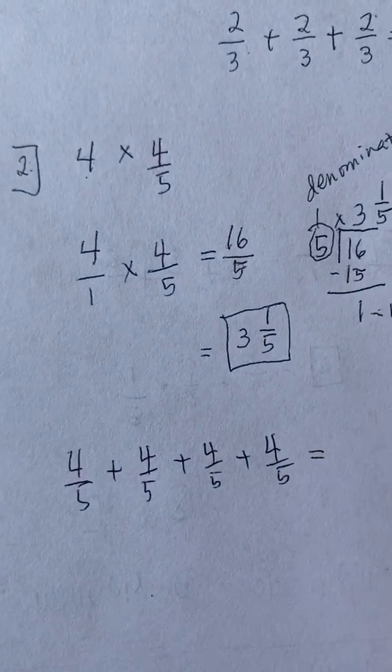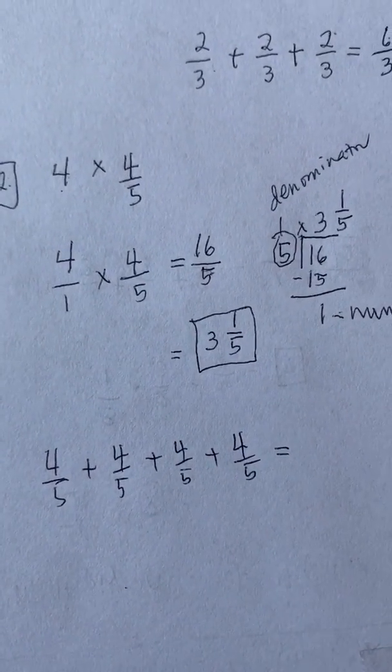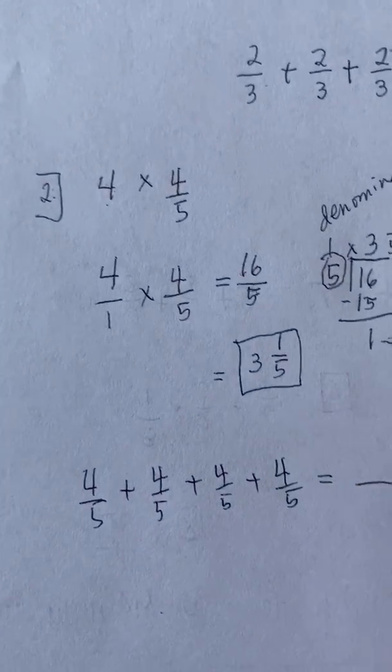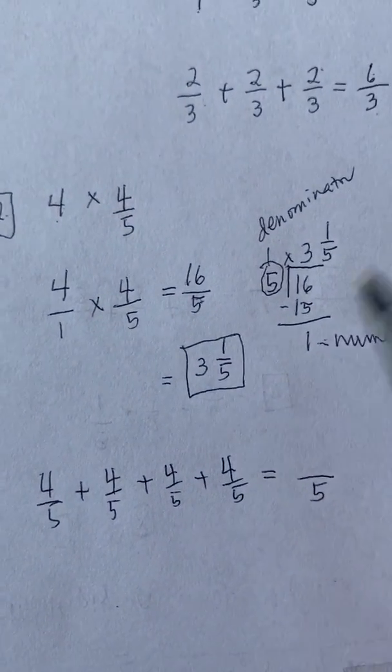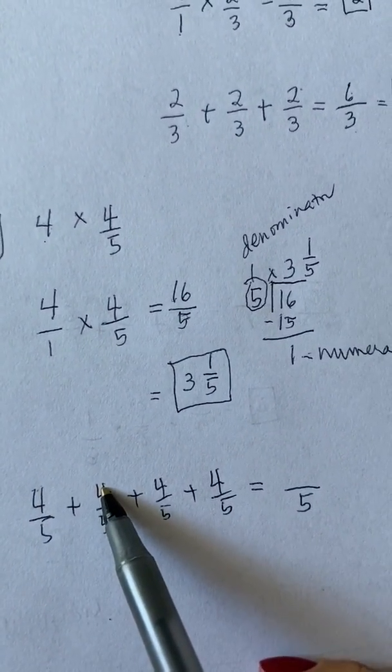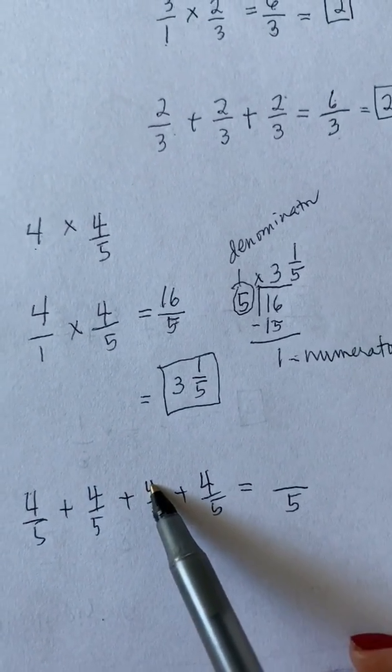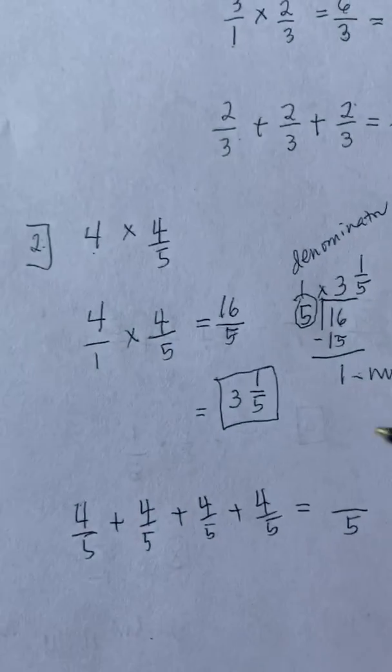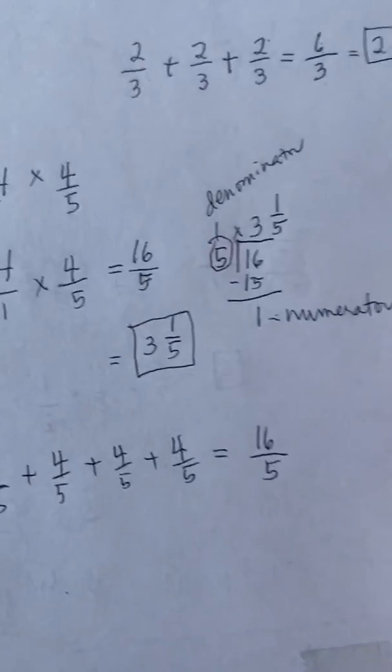Again, we are not adding the denominator, but simply copy it, which is 5. All you have to add are the 4's. So you will have 4 plus 4 is 8 plus 4 is 12 plus 4 is 16. So you will have 16 over 5.